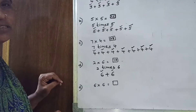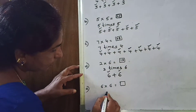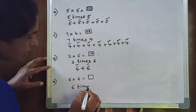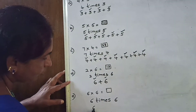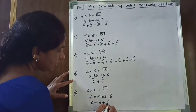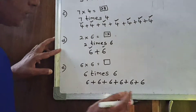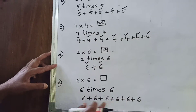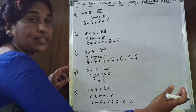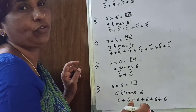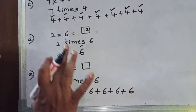And coming to the last one: 6 sixes are. 6 times 6. So you have to take 6 six times: 1 time, 2 times, 3 times, 4 times, 5 times, 6 times. Count: 1, 2, 3, 4, 5, 6. After writing, once again count whether you have taken exactly 6 times or more or less — you might get confused. So after writing, just count: 1, 2, 3, 4, 5, 6 — yes, you have taken 6.